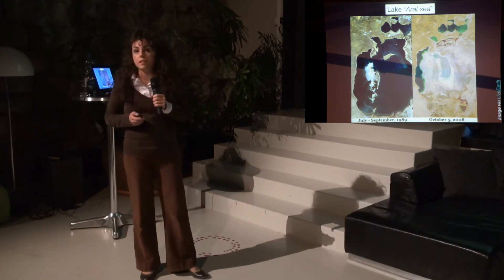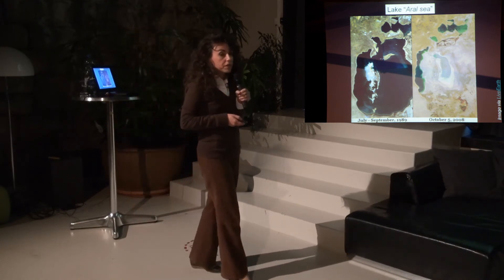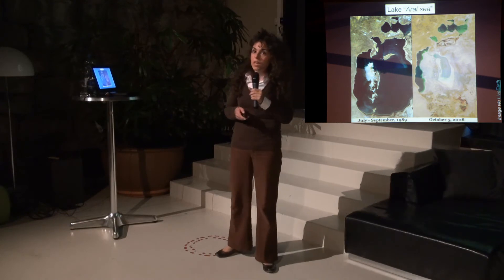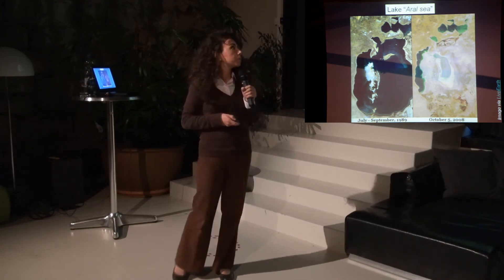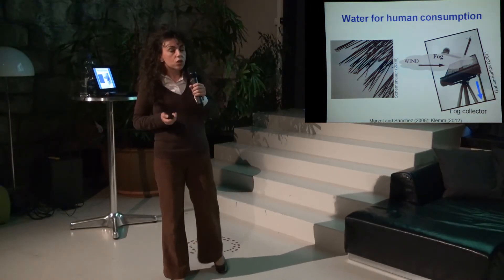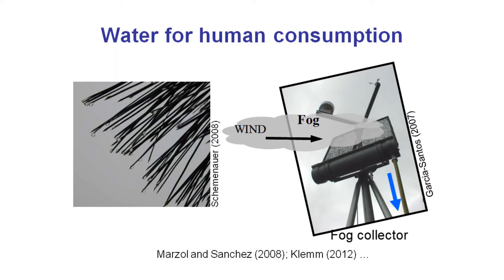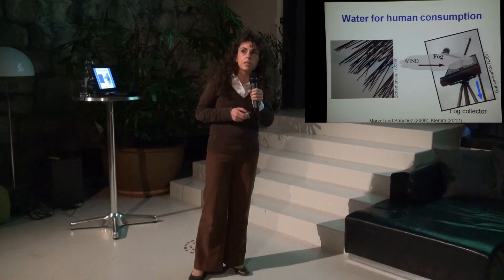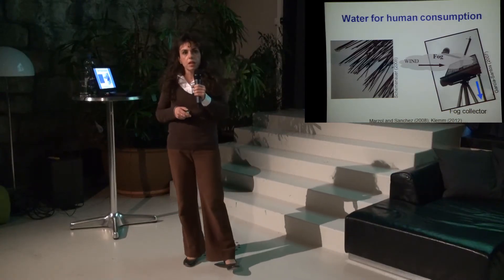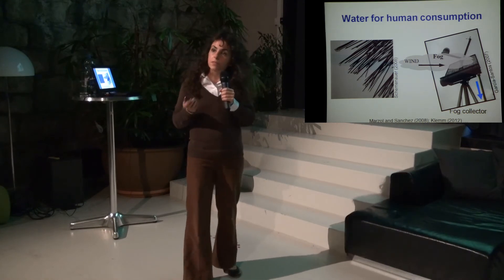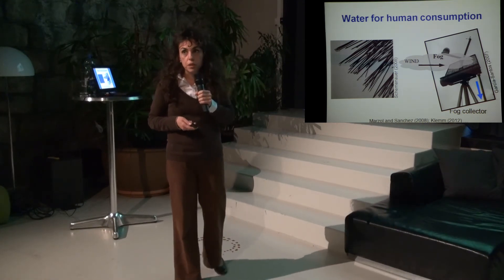Ecohydrology is a very exciting and diverse science. We can solve problems like water scarcity for human consumption by looking at how forests are able to catch little drops from fog. We build fog collectors and put them in windy places like roofs of houses where water is scarce, so families can have an extra water input from fog.